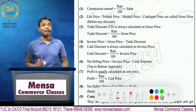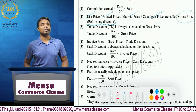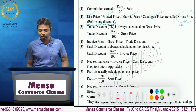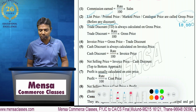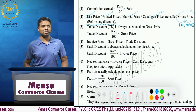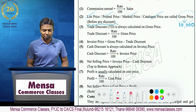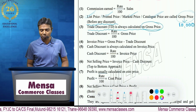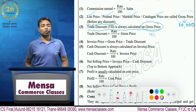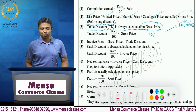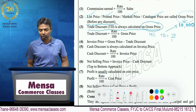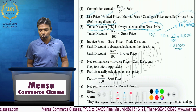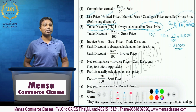Iske upar abhi tak humne discount apply nahi kiya hai — we have not applied discount on this. So, aapka jo gross price hai, suppose is 10,000 rupees. Iske upar discount calculation hoga. Sab se pahla konsa discount ka calculation hoga? Trade discount — kiske upar hoga? Gross price pe. Kitna percent? Suppose 10 percent. So, 10 percent on 10,000 — that will come to rupees 1,000.